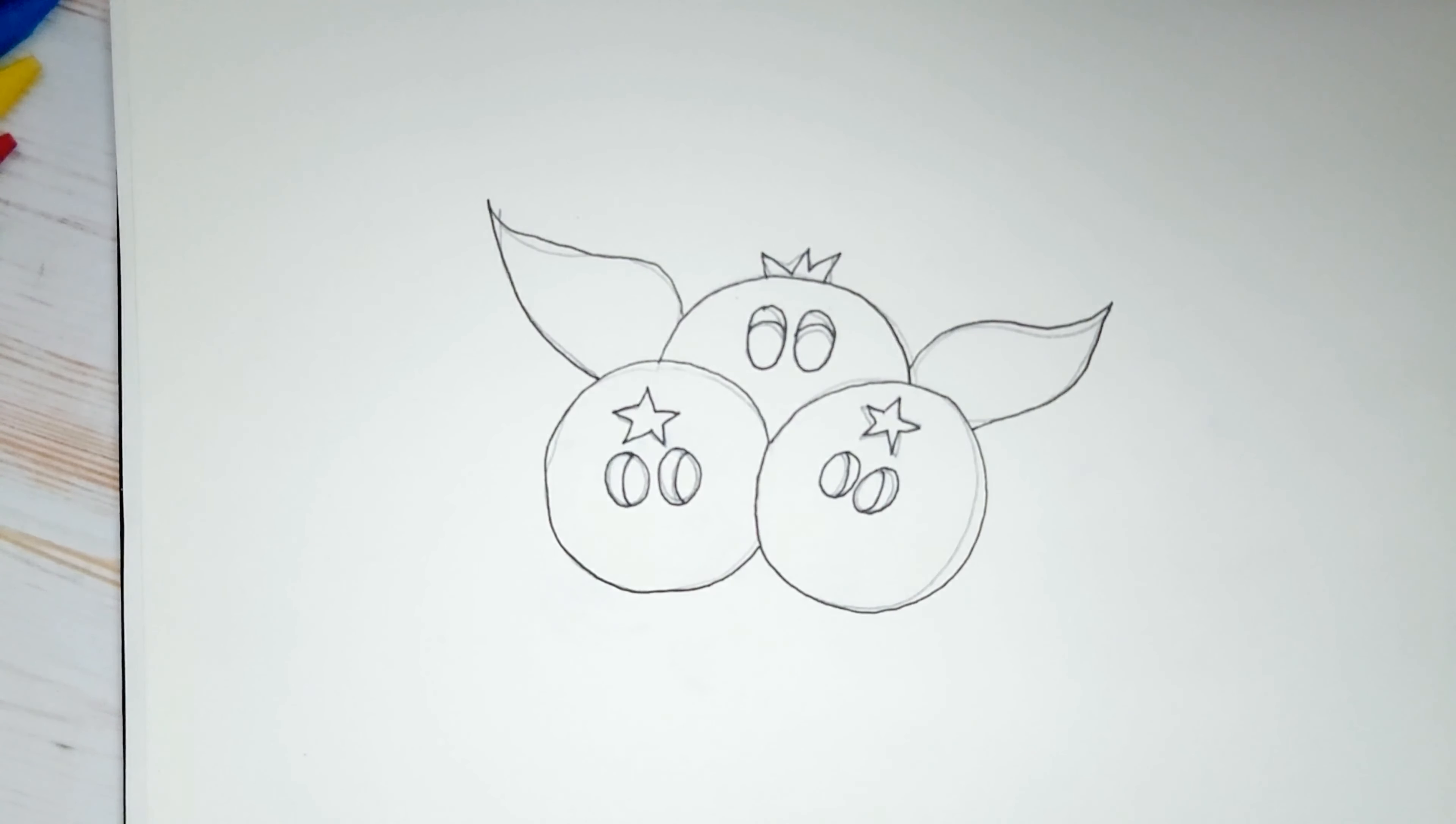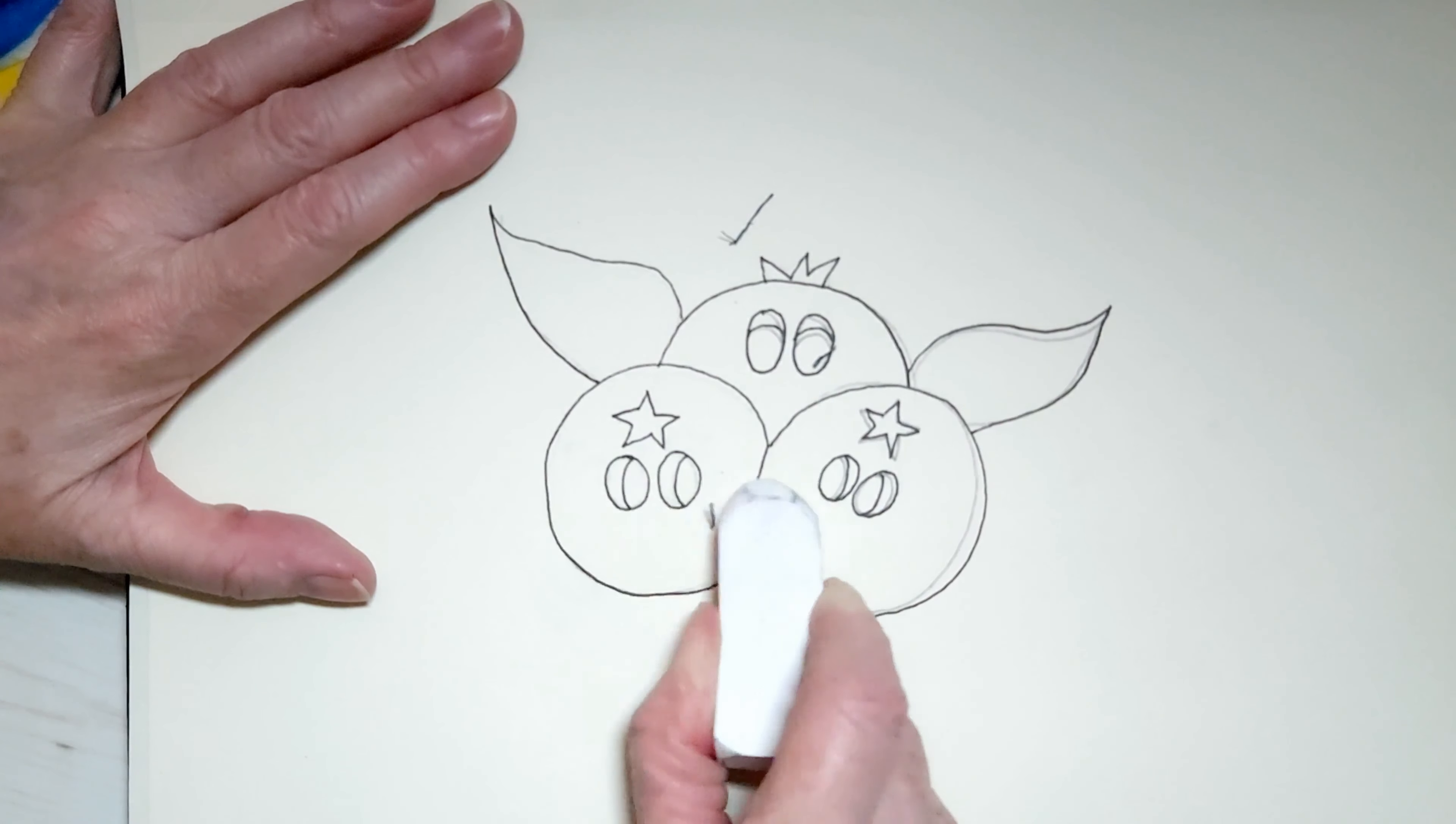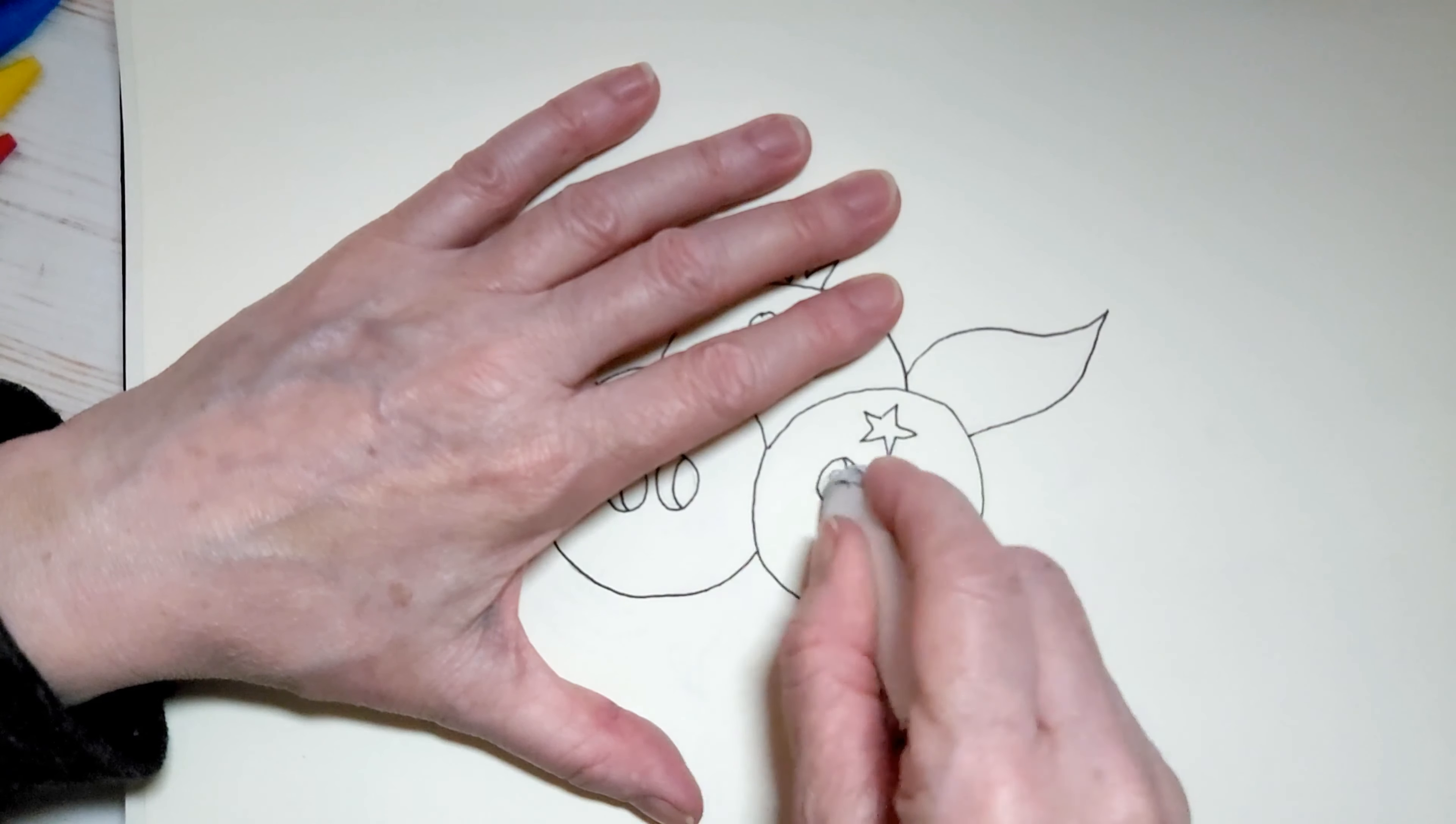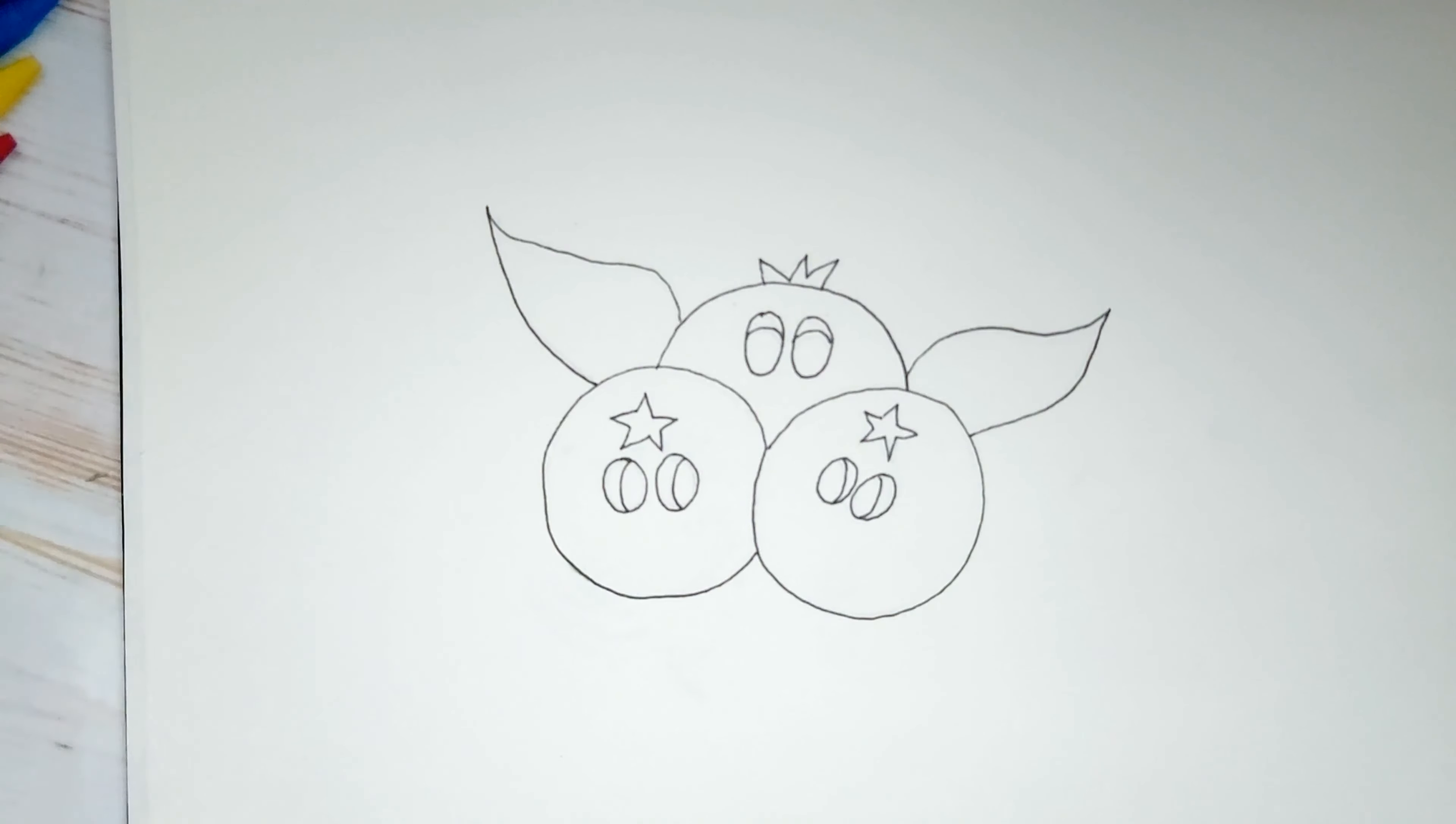Now I'm going to erase my pencil lines, but I want to make sure that my marker is dry. So a good way to do that is take a paper towel. Don't move it around. Just push it down. And if you see you have marker on your paper towel, it's still wet. So you have to wait a little bit. Mine is dry. So I'm going to take my eraser and just erase all of my pencil marks. I'm not going to erase too hard because it is possible to erase marker. If you press your eraser down too hard, you could smudge your marker and it fades and it doesn't look very nice. So let's just go easy on the eraser. That's what I'm doing right now. I'm going over it a second time.